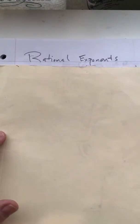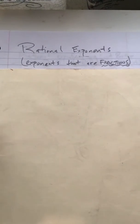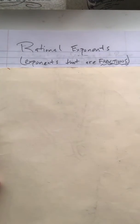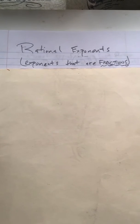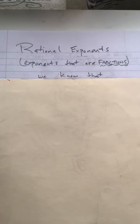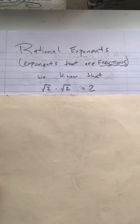Alright, so this video is about rational exponents, which are exponents that are fractions. Everybody's a little bit scared of fractions, so an exponent that is a fraction can be kind of confusing or scary looking. That's what rational exponents are. I want to show you how you can make sense of them in this little video. We're going to start off with something that we know to be true: if you have the square root of 2 times the square root of 2, that equals 2.